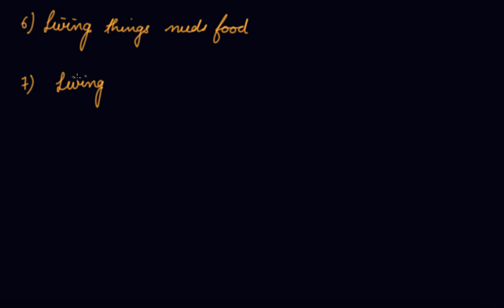Seventh characteristic: living things excrete, which means they throw waste out of the body. Several processes go on inside our body such as digestion and respiration. During these processes, waste products are produced and removed in the form of urine, sweat, or roughage. Similarly, plants excrete water vapors and carbon dioxide through small pores called stomata present in their leaves or stems. So every living thing excretes wasteful substances.